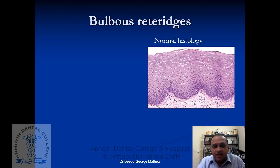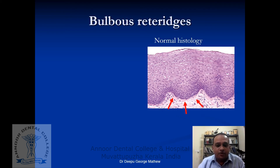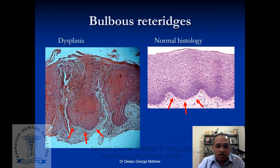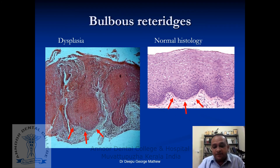Now the architectural features. The first is bulbous rete ridges. In a normal buccal mucosa histology, you can see how the rete ridges appear. But in dysplasia, you may see large bulbous or teardrop-shaped rete ridges. This is another architectural feature, which signifies that the epithelial tissue as a whole is in a highly proliferative mode.